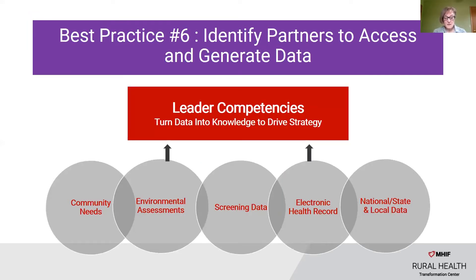Best practice number six is to identify partners to access and generate data. For all population health initiatives, developing relationships with various stakeholders who have access to data is essential for success. Using collective data can help prioritize community health issues. Explore ways to leverage points of alignment by working together, sharing resources and data, and aligning strategy to maximize the impact of collective actions through effective coordination of potential resources. It's important to revisit the process from time to time as the work evolves or as new groups are formed within the community to attract and engage new stakeholders and modes of support.